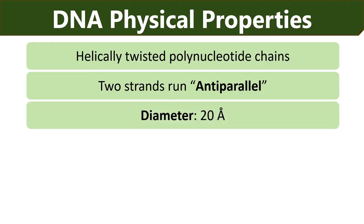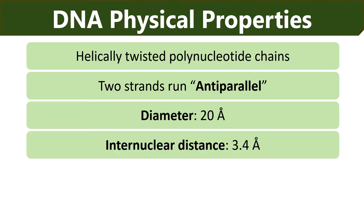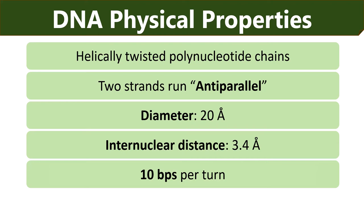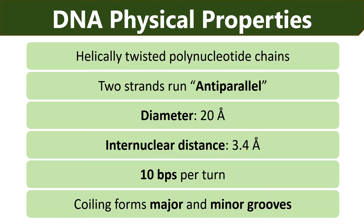The diameter of double stranded DNA is generally 20 Angstroms. The internuclear distance is 3.4 Angstroms. In a single turn of DNA, 10 base pairs are present having a length of 34 Angstroms. Coiling of DNA results in the formation of some wide indentations called major grooves and some narrow indentations called minor grooves. These grooves function as a site for DNA binding proteins.